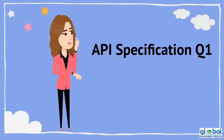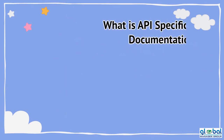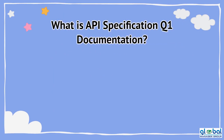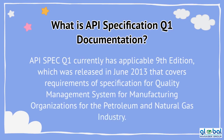Are you searching for the API Specification Q1 Documentation Kit? Overview of API Specification Q1 Documentation: API Specification Q1 currently has the applicable 9th edition, which was released in June 2013. It covers requirements of the Specification for Quality Management System for Manufacturing Organizations for the Petroleum and Natural Gas Industry.